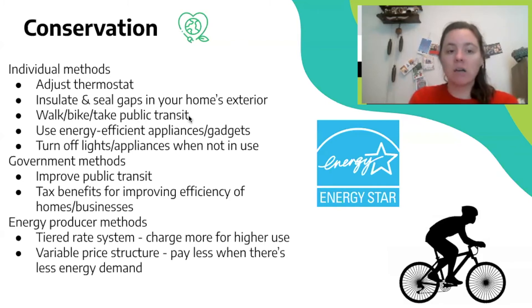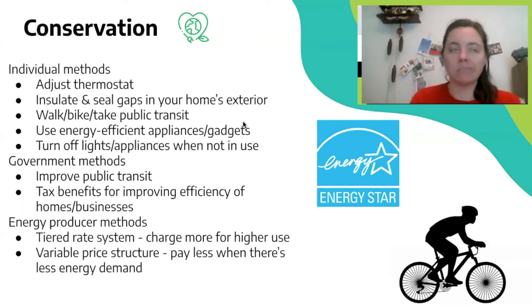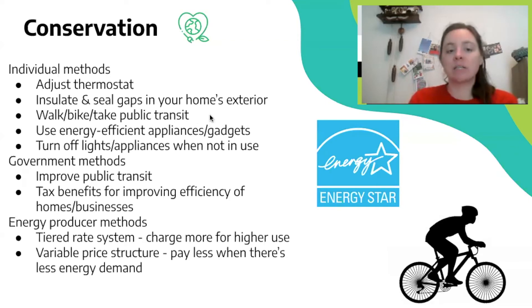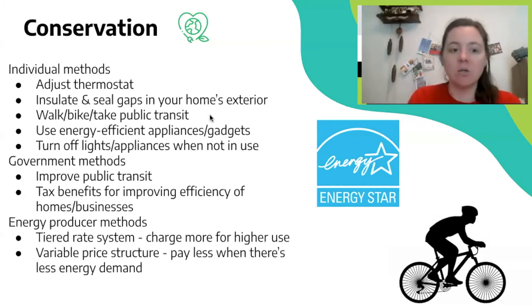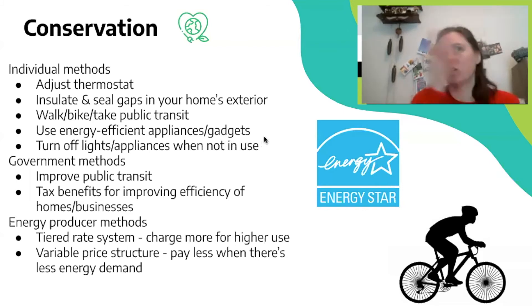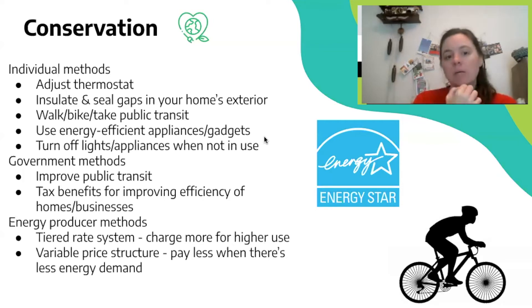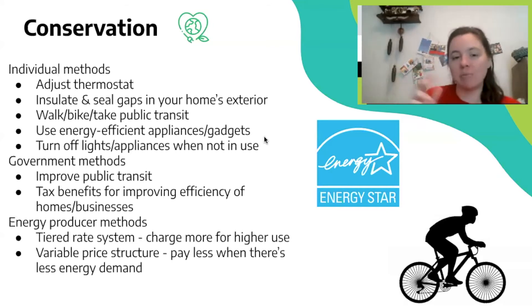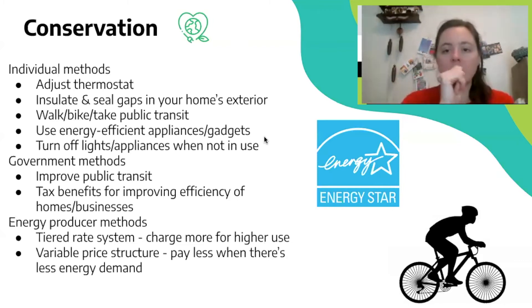For transportation conservation, walking or biking uses no external energy source other than the food energy you consume. Or you can take public transit. Having more people in a vehicle — carpooling or public transit — increases the efficiency of that energy use. You can also use energy-efficient appliances and gadgets, like switching your light bulbs to LEDs instead of incandescent or compact fluorescent. Turning off lights and appliances when not in use also helps, especially devices with little red standby lights that are still drawing a small amount of electricity even when off — unplugging those will reduce your electricity use.